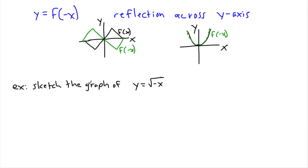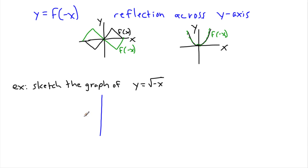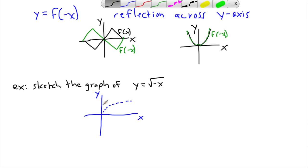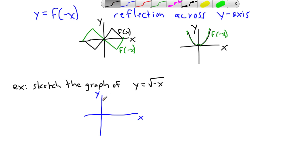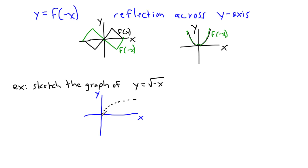Here comes an example: sketch the graph of y equals square root of negative x. I can just take my x and y axes and think about my parent function. This looks like a square root of something, so I'm going to draw what the square root of x looks like — that's this. This is my parent function, square root of x. But I want to reflect it across the y-axis, so it's like the y-axis becomes a mirror, and the graph actually goes like this — almost like a little bird. This right here is the reflection.